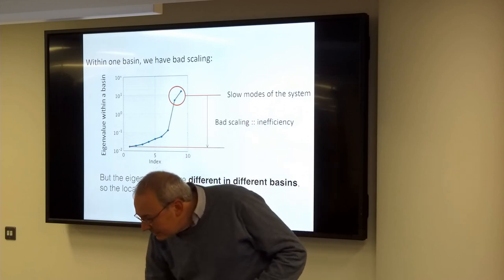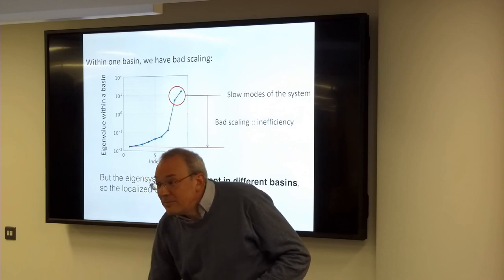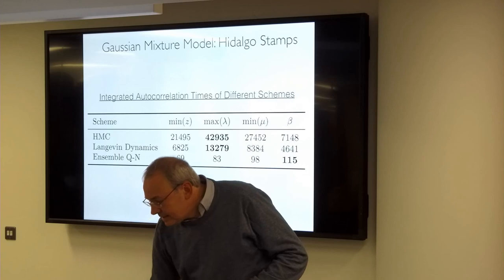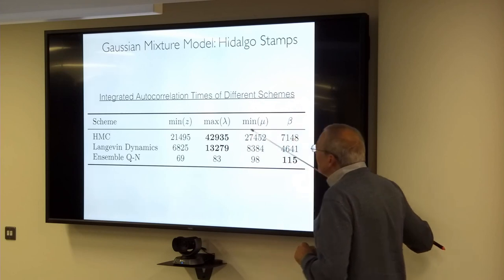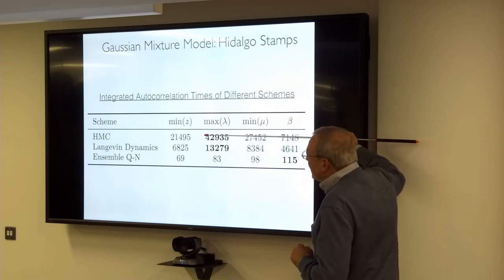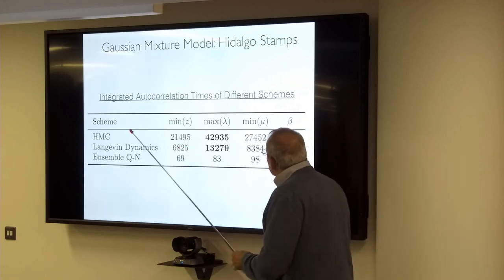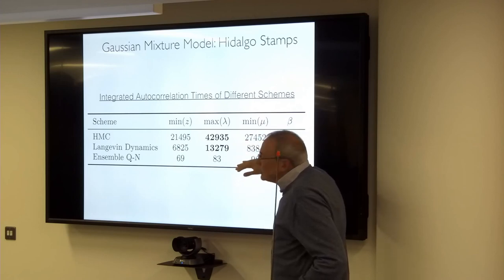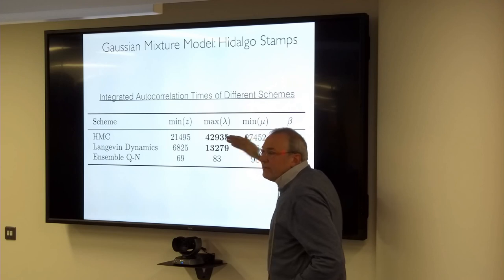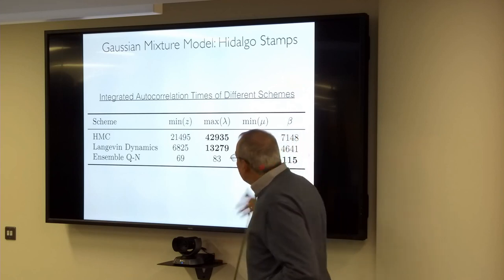The idea is ensemble preconditioning using a family of walkers — that's the parallel computing component. Distribute walkers around the system to explore different minima in the landscape, build local covariance approximations from the collection of walkers, so each walker sees a slightly warped version of the system corresponding to its current state. For the Gaussian mixture stamp model, you need a local covariance because the scaling picture is different in each basin.